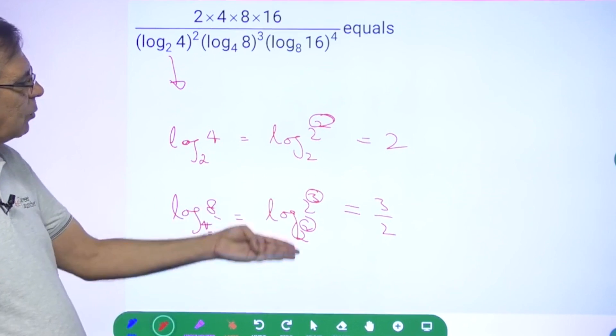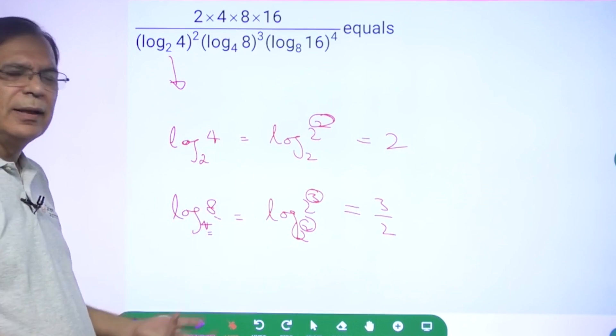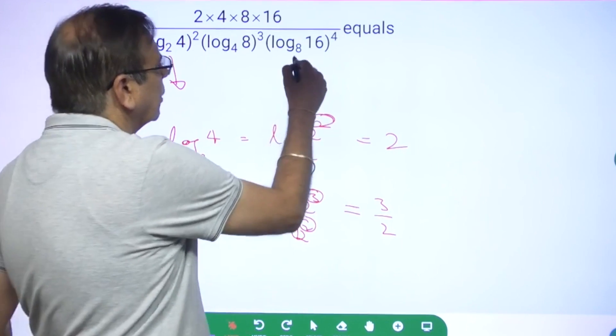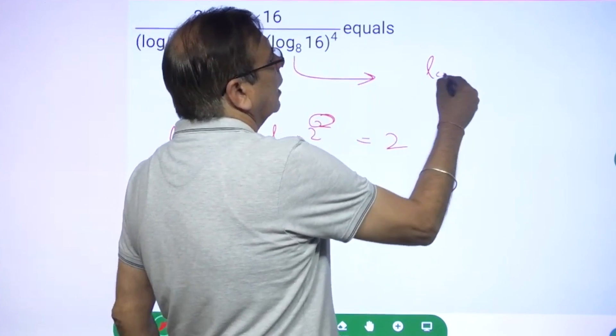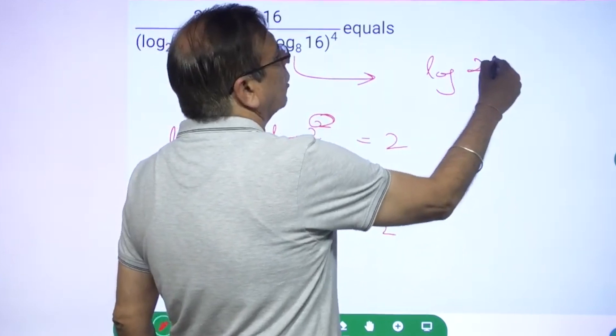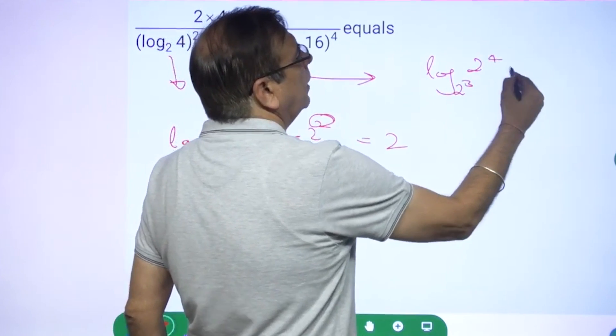How do you do that? Convert both of them into log of base 2 and you will get the answer. But I don't want to waste that much time. So by the same logic, what will this be? This is nothing but log of 16 is 2 to power 4, 8 is 2 cube, so what will this be? This will be 4 divided by 3.